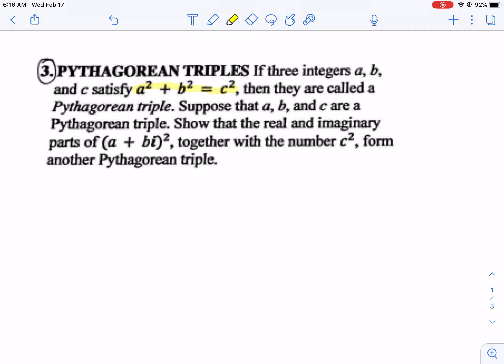If A, B, and C are Pythagorean triple, I want you to show that the real and imaginary parts of A plus BI squared together with C squared form another Pythagorean triple.